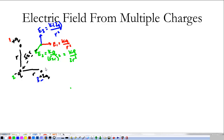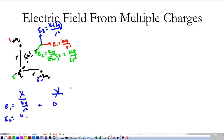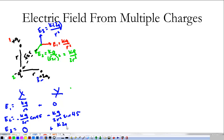Now, we're not going to do it here, but if we wanted to add all of those together, we'd have to break them into x components and y components. E1 only has an x component: kq over r squared, plus 0 in the y. E2 has both an x and a y component, and both are negative: negative kq over 2r squared times cosine 45 in x, and negative kq over 2r squared times sine 45 in y. And E3 has nothing in the x direction; in the y direction it's positive k times 2q over r squared.